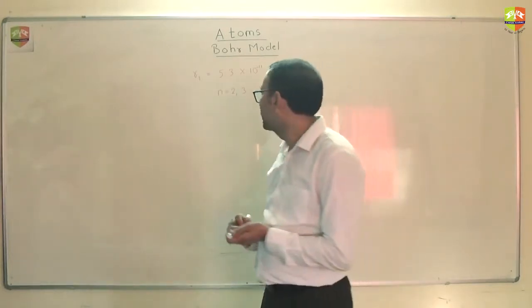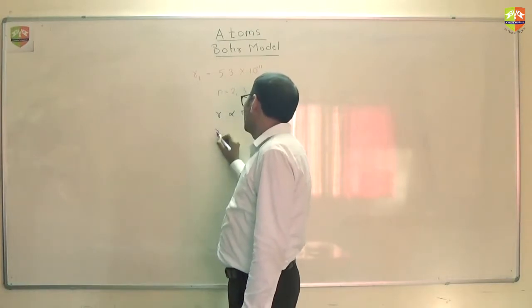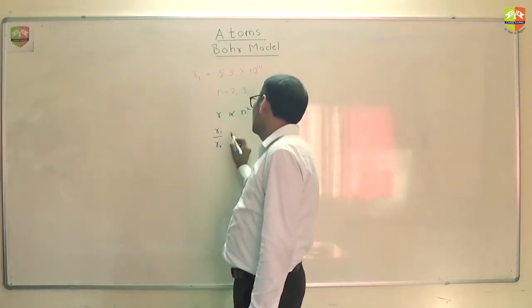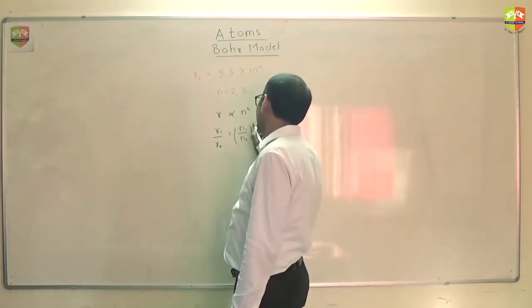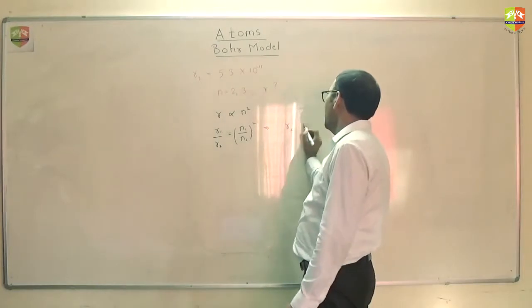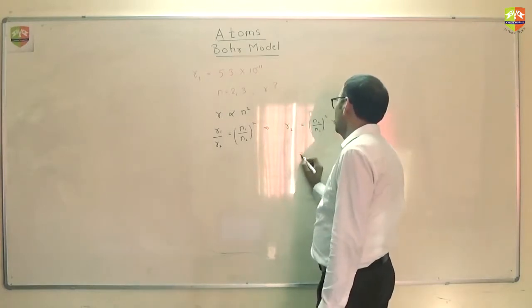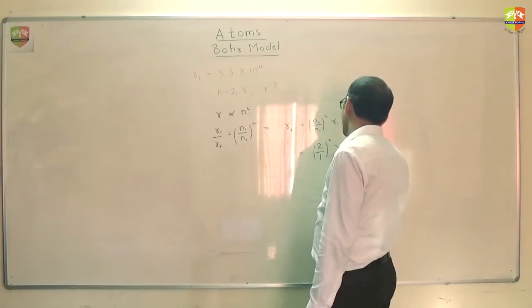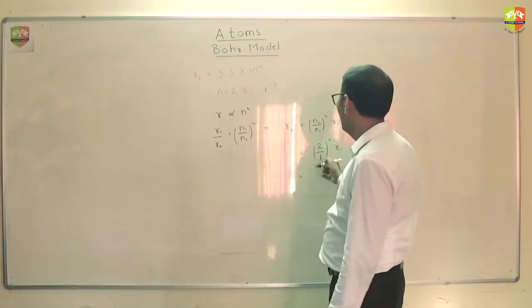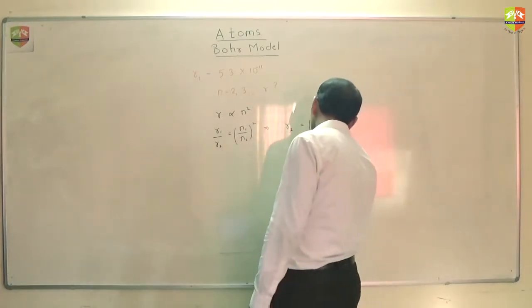So if it is proportional to n square, you can have R1 by R2 equal to n1 by n2 whole square. So from here, I can get R2 equal to n2 by n1 whole square into R1. n2 is 2, 1 whole square R1. So it is 4 into R1, 4 times. So this is 21.2 into 10 to the power minus 11 meters.